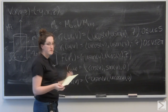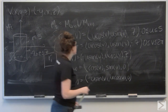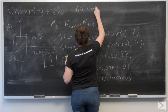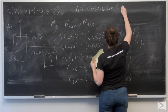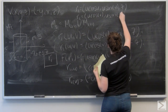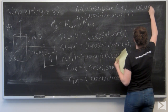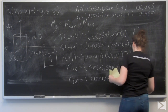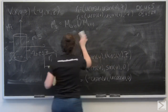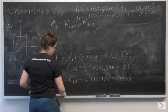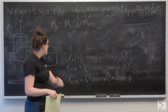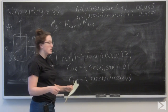Now I want to find their cross product using a matrix and cofactor expansion. I'll set up the three by three matrix with the top row as the vector components I, J, and K, the second row as R1 sub U, and the third row as R1 sub V.